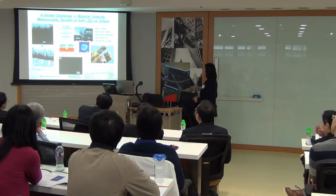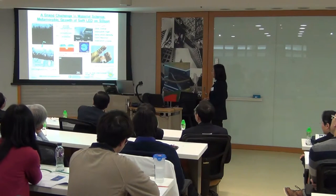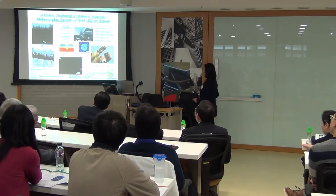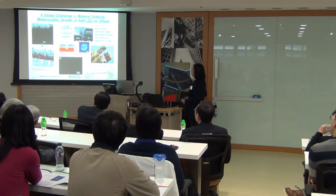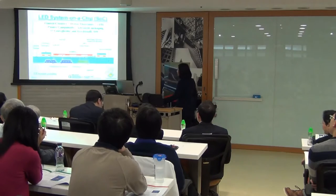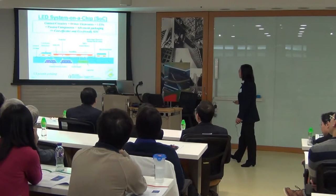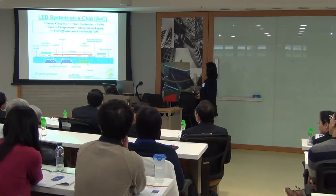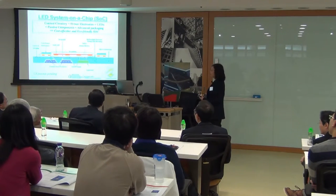We were able to grow blue LEDs on silicon, then transfer them onto copper, achieving very high performance LEDs. We can also transfer these LEDs onto a flexible substrate. We also use nano-patterned silicon substrates for growth, to do strain engineering, get rid of cracks, and balance the strain in the wafer. This is the system-on-chip our whole team is working on, as outlined in our proposal.